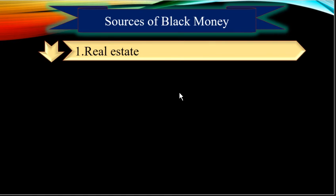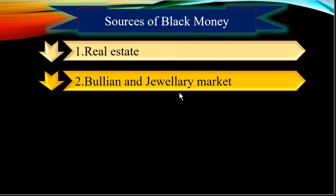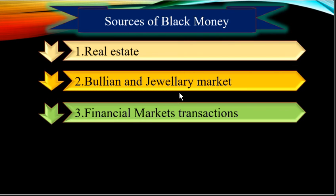The first source of black money is real estate. Due to rising prices, the tax incidence on real estate transactions in the form of stamp duty and capital gains tax creates incentives for tax evasion through under-reporting of transaction prices and cash payments to contractors, which may generate black money. Next is the bullion and jewelry market, which allows buyers to convert black money into gold and bullion, while giving traders the option to keep unaccounted wealth as stock not disclosed in books or valued below market price.